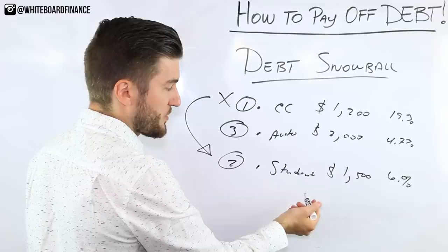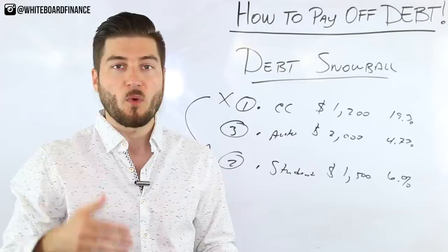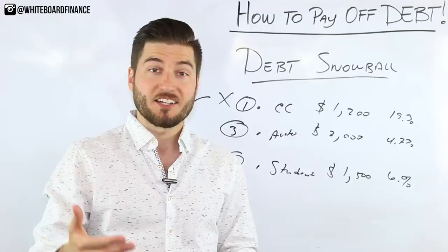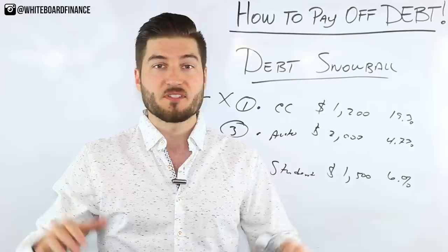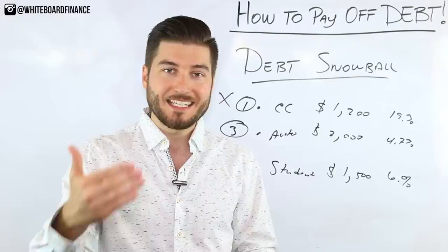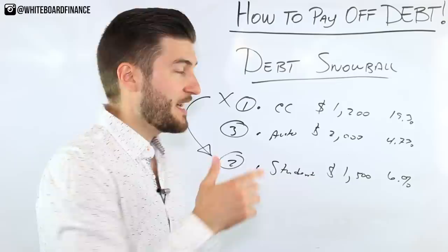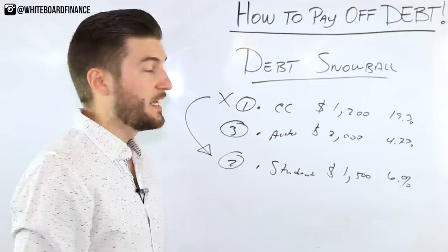So why does Dave Ramsey and why do I recommend doing it this way? It's simply because it's psychological and it's proven to work. Think about it: when you're out of shape and want to get back to the gym, do you start doing 30 hill sprints, 50 pull-ups, and a thousand push-ups? No, you gradually ease your way into getting back into shape. That's how the debt snowball works. There are actually multiple studies that have proven that once you knock out your small debts first, those are like small psychological wins.